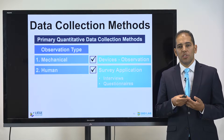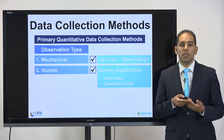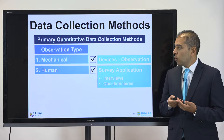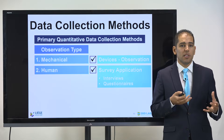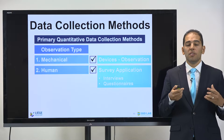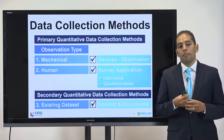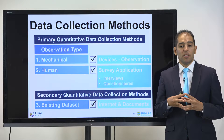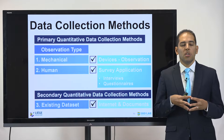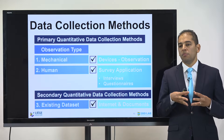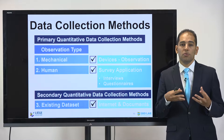Another important classification distinguishes primary from secondary data collection methods. Primary quantitative data collection methods involve mechanical data collection types — devices that are collecting the data for us — or human-based survey applications, whether using interviews or questionnaires. Secondary quantitative data collection methods involve looking for existing data sets by referring to internet or open sources, documents, articles, reports, and so on, found in public repositories, and processing them online or in a physical format.